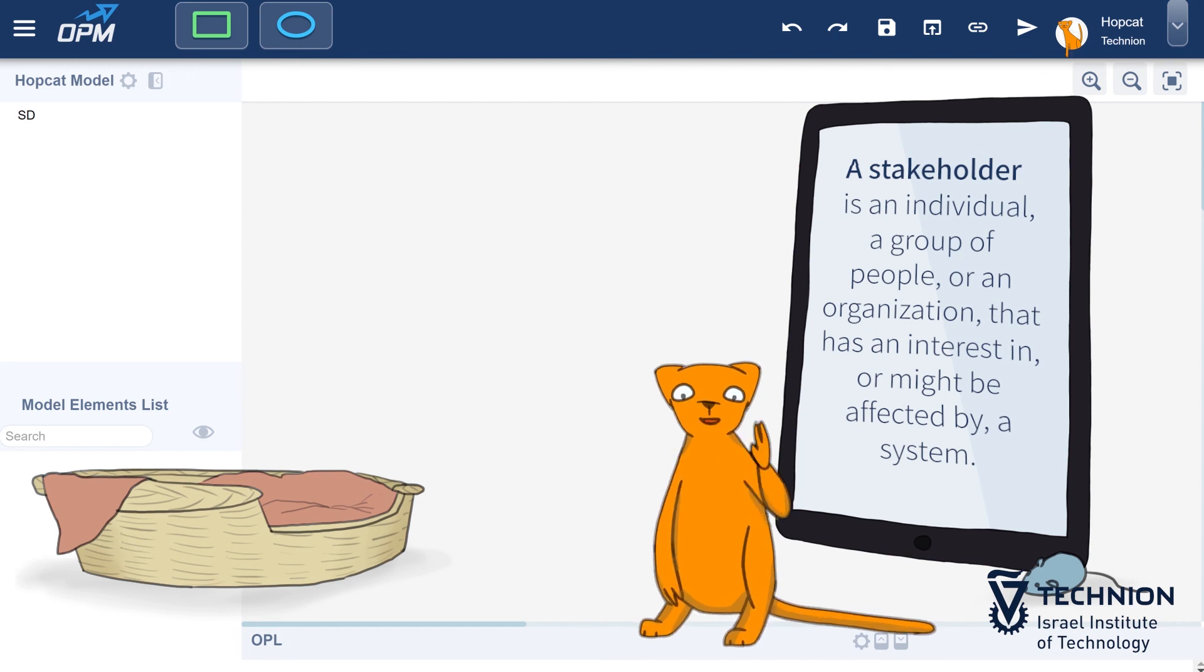A stakeholder is an individual, a group of people, or an organization that has a keen interest in, or might be affected by, a system.